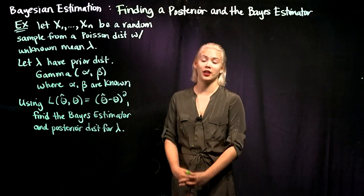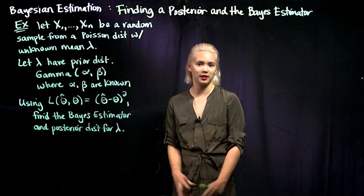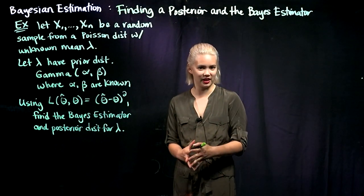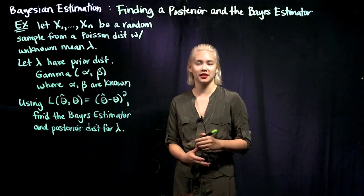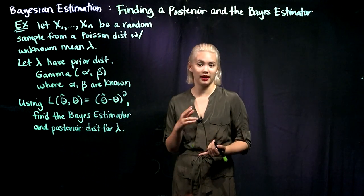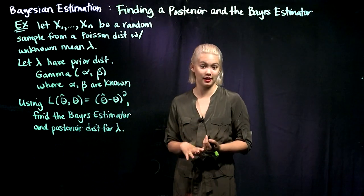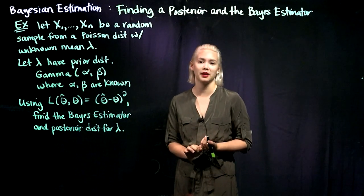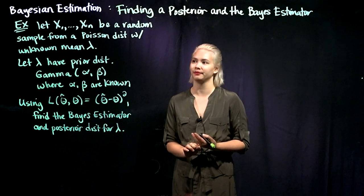Now that we've been introduced to all the ideas of Bayesian estimation, let's tie it all together and do an example. In this example, we'll be working on finding a posterior distribution and finding the Bayes estimator for a parameter.